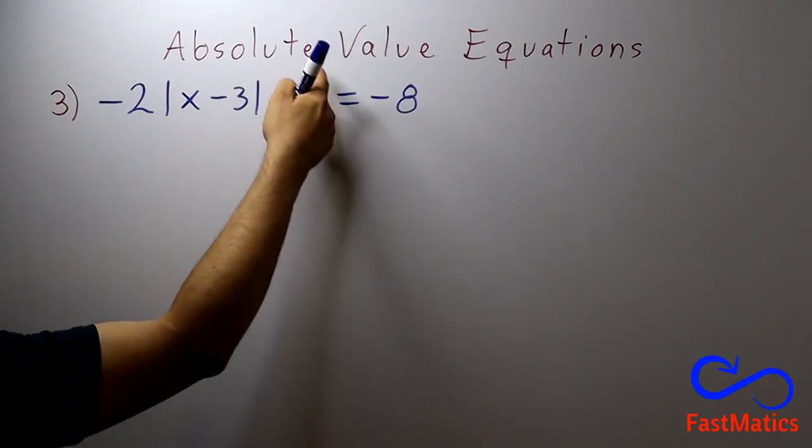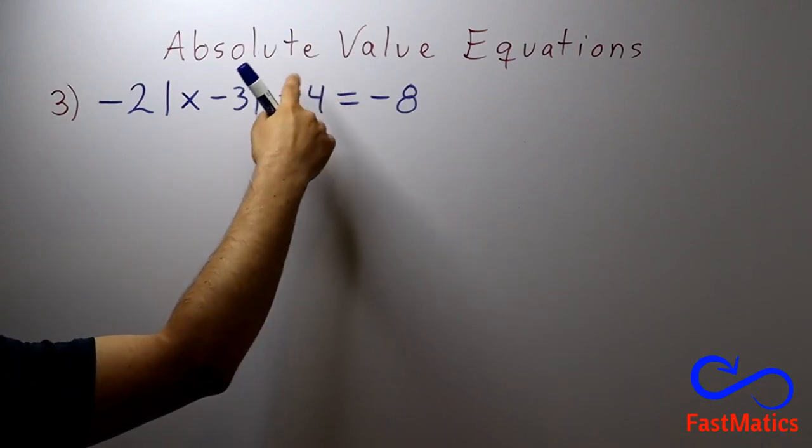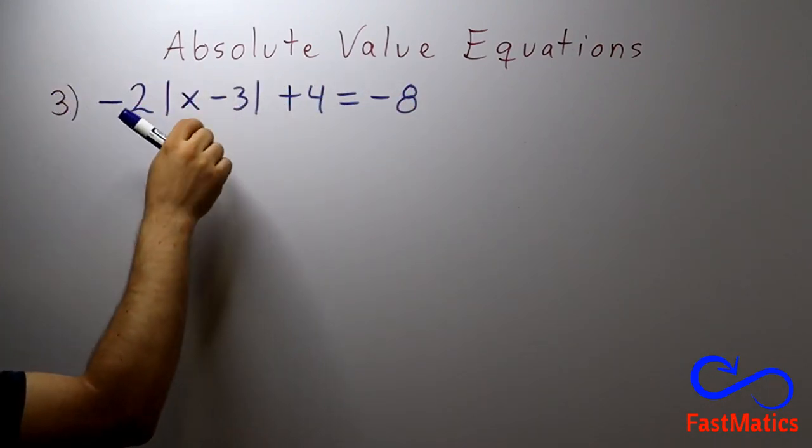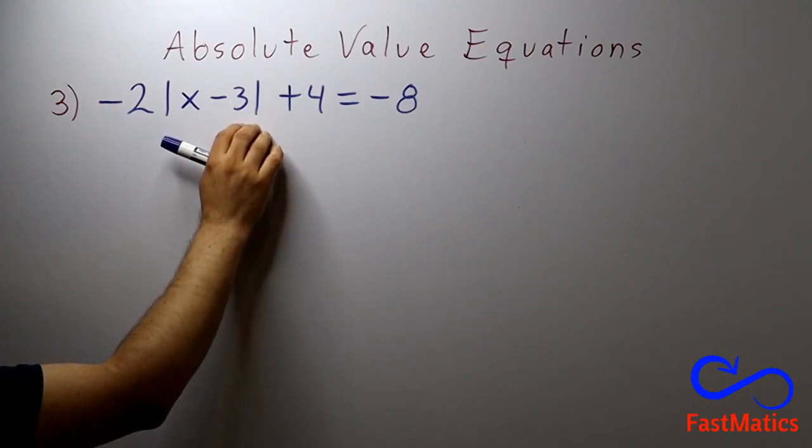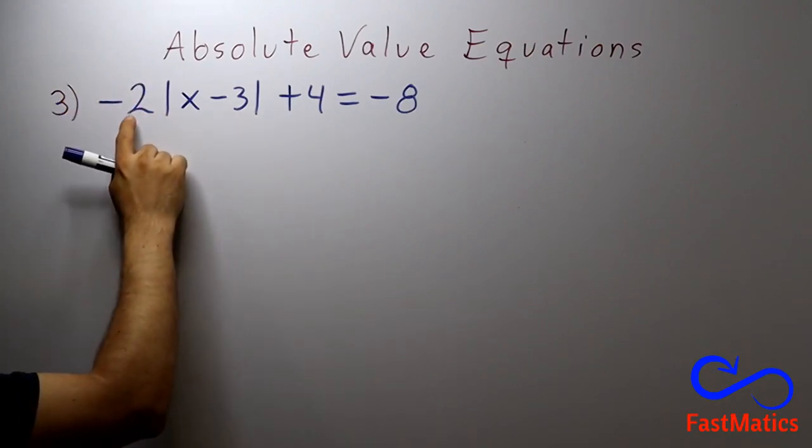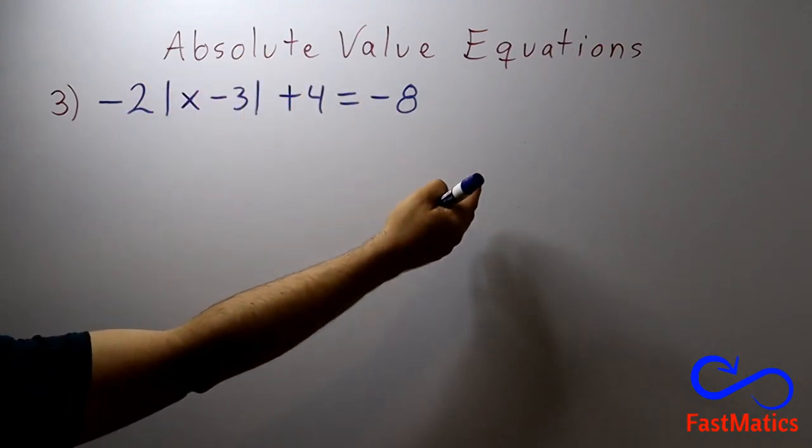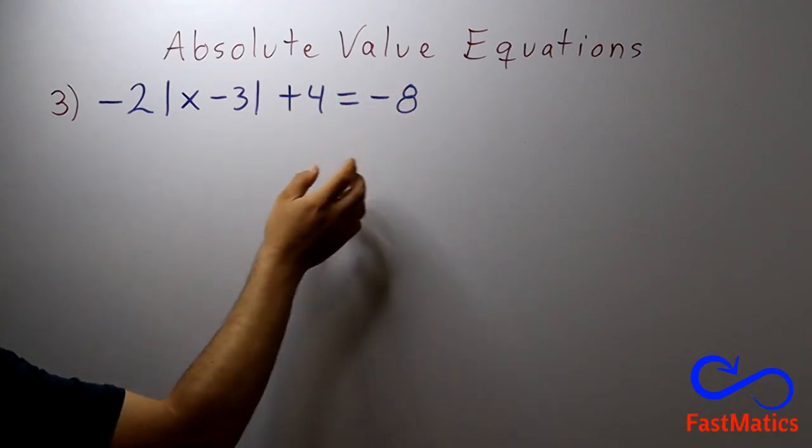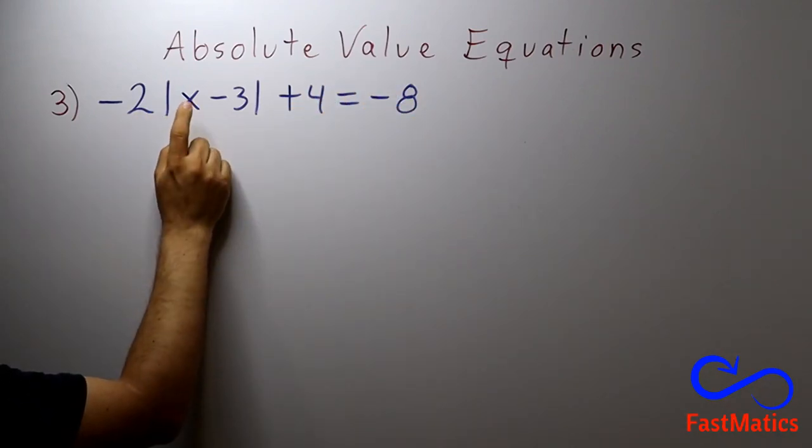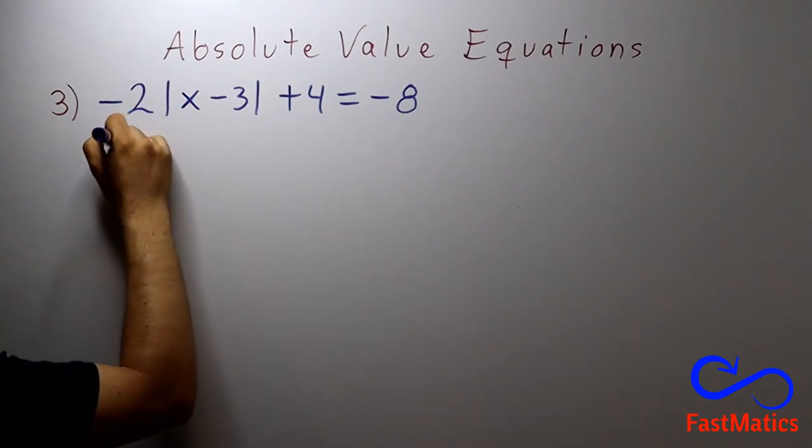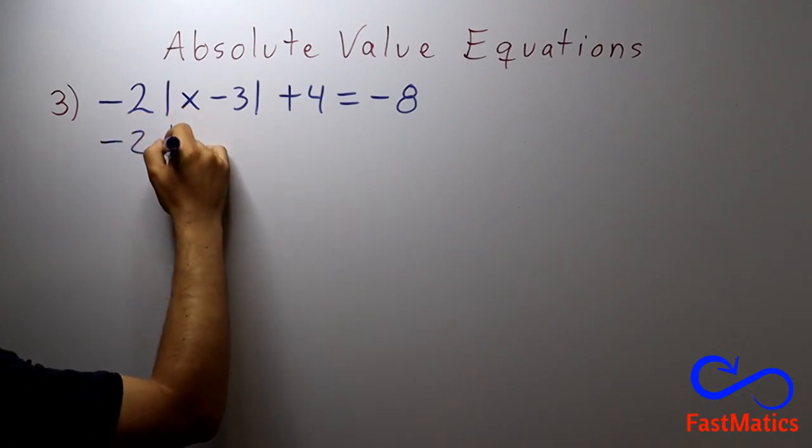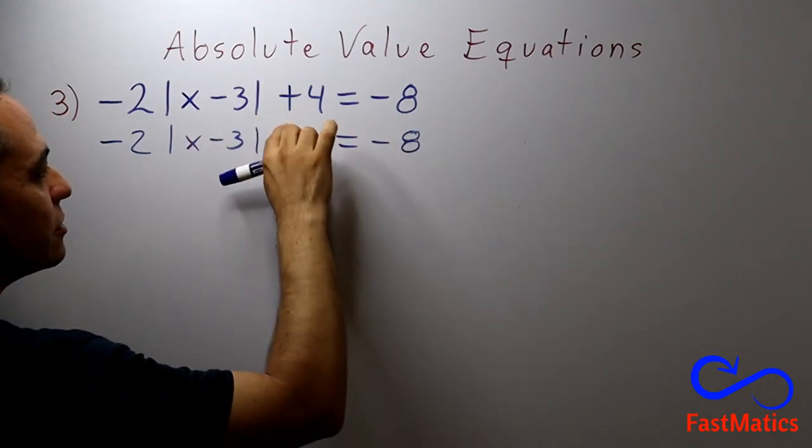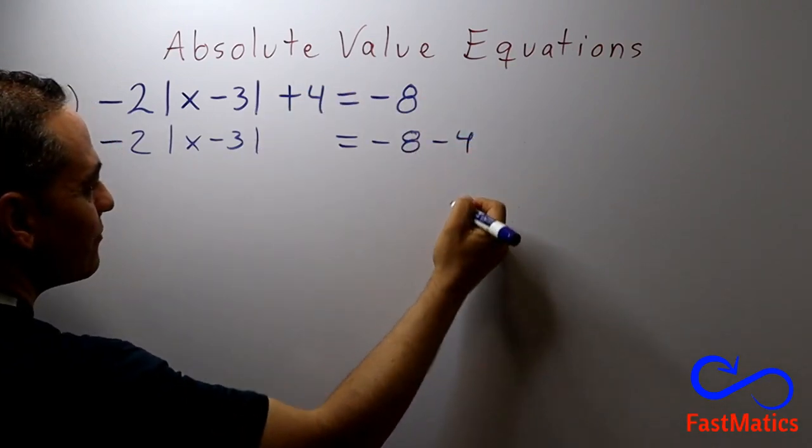So here, first the plus 4 will pass first, because I need to leave this part alone. I have the plus 4. First you will pass the numbers that are not the closest numbers to the x, and you copy the negative 2, you copy the absolute value, and you copy everything, but the plus 4 will pass as a negative 4.